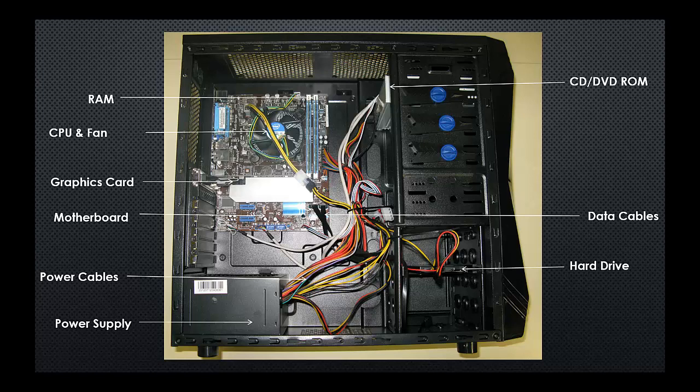Starting from the top left, we've got RAM, we've got the CPU and fan, we've got a graphics card. We have the motherboard, we have power cables, a power supply, a hard drive, data cables, and a CD/DVD-ROM.